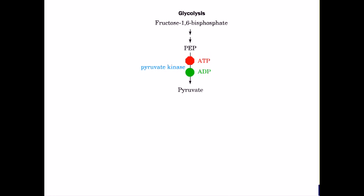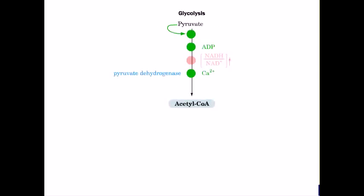The conversion of pyruvate to acetyl-CoA by pyruvate dehydrogenase is another highly regulated reaction. The reaction is activated by pyruvate, ADP, and calcium ion concentration. It is inhibited by increases in the ratio of NADH over NAD+ and by the product acetyl-CoA.